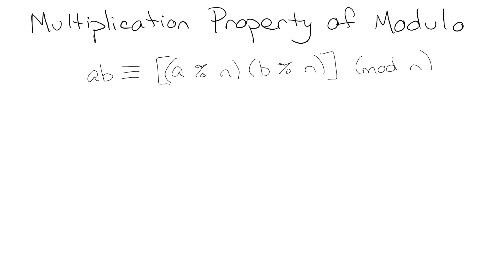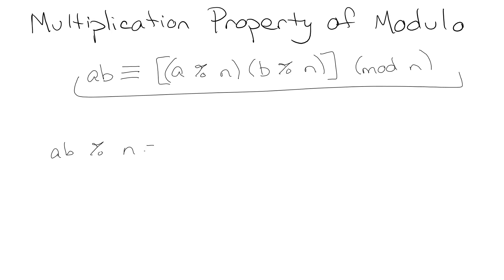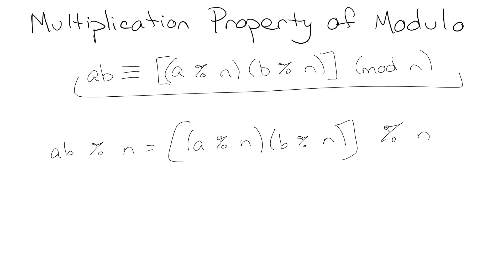We're going to look now at the multiplication property of modulo, and we're going to prove it. It's a super fantastic way of doing modulo theory. The idea is that a times b mod n equals a mod n times b mod n, and then you mod n it again. So basically, you can take the factors of something you're trying to take the modulus of, take the modulus of all the factors, multiply all those together, and then mod n it again, and you get the correct answer.